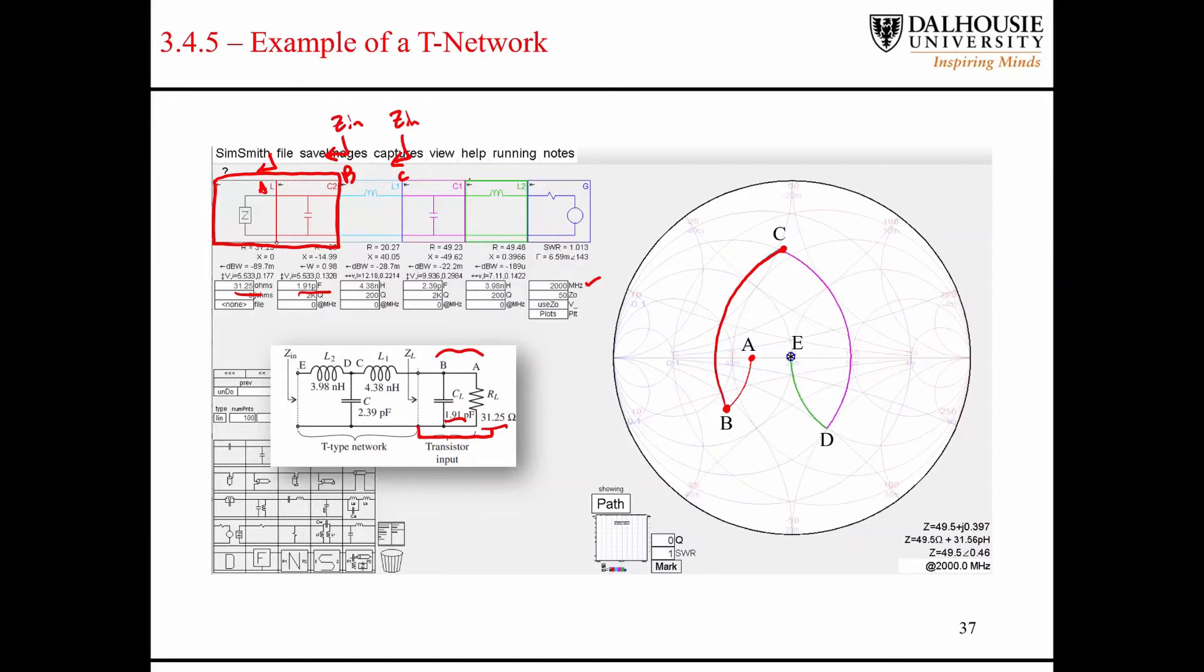Now point D corresponds to this point. We're measuring our input impedance after the capacitor, and we have a shunt capacitor. The shunt capacitor causes our impedance to rotate downward along a circle of constant conductance down to point D. It's very important to understand these rotations and what circles you're supposed to follow.